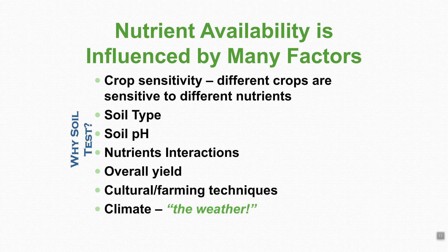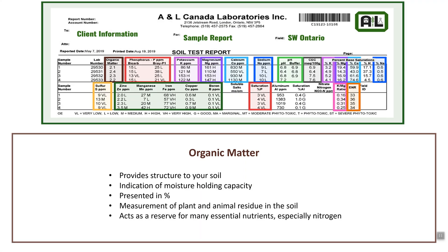Mother nature also plays a major role in your soil productivity. The first thing we see on our soil test report is organic matter. Organic matter is very important — it provides structure to your soils and is an indication of your soil moisture holding capacity. It is presented on the soil test report as a percentage. Most mineral soils are in the two to five percent range, while organic soils can exceed ten percent, sometimes up to fifty percent. It is a measurement of plant and animal residue in the soil and acts as a reserve for many nutrients, especially nitrogen.